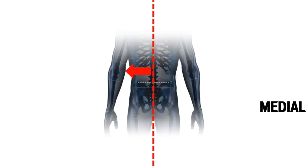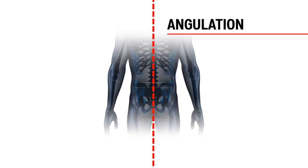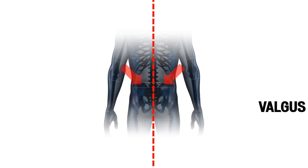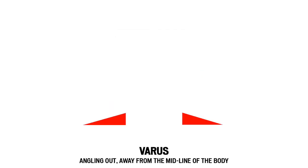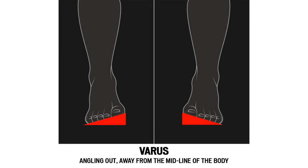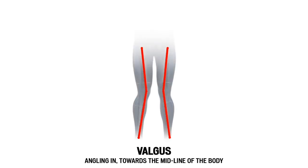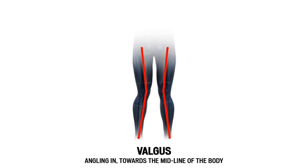Next we will consider angulation. Varus angulation slopes away from the midline of the body. Valgus angulation slopes in towards the midline of the body. For example, these triangles slope away from each other, like these feet where the big toes are elevated compared to the little toes, creating a varus angulation. In this example, we see two angled lines pointing at each other towards the midline, like knees that are close to each other — this is valgus angulation, sloped in towards the midline.